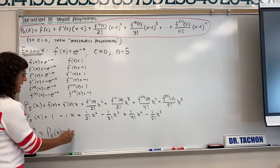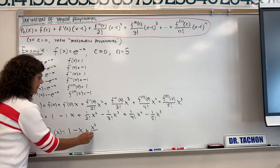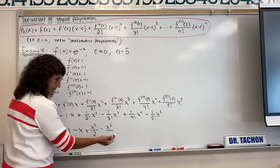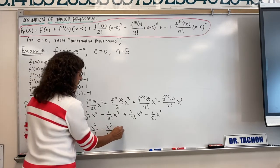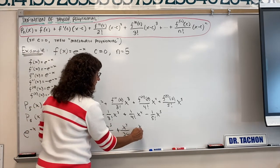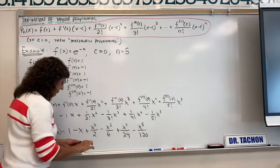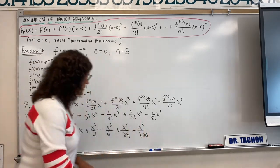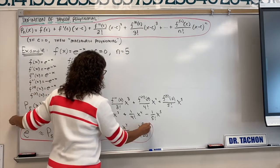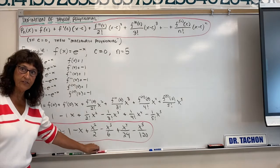Let's simplify one more step. We have 1 minus x, plus x squared over 2 — since two factorial is 2 — minus x cubed over 6, since three factorial is 6, plus x to the fourth over 24, since four factorial is 24, minus x to the fifth over 120, since five factorial is 120. This is our polynomial expansion for e to the negative x centered at x equals zero.